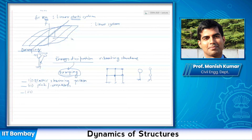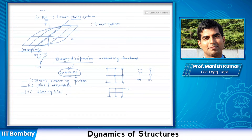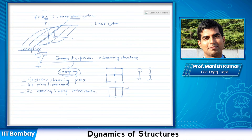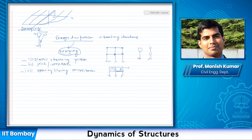Instead of a steel building, if I had a concrete building, it does not have the same type of connections. But when you apply a force, concrete has micro-cracks, and these micro-cracks open and close due to the applied force. So energy can be dissipated due to opening and closing of these micro-cracks. In a real structure there could also be windows, furniture, and other non-structural components. When the structure vibrates, there is interaction between these non-structural components and the structure itself, which leads to further energy dissipation.